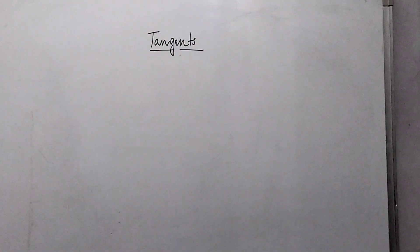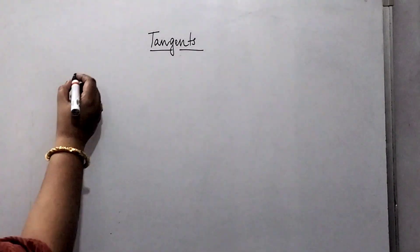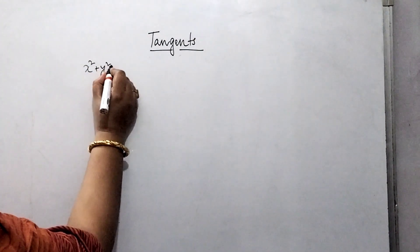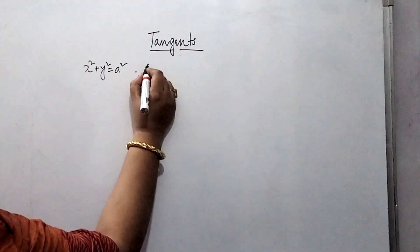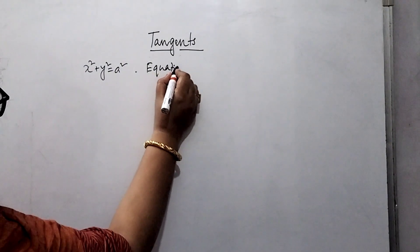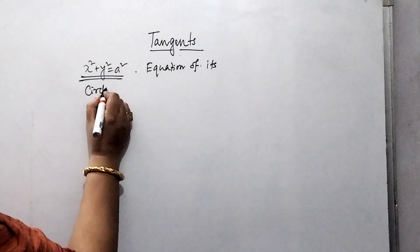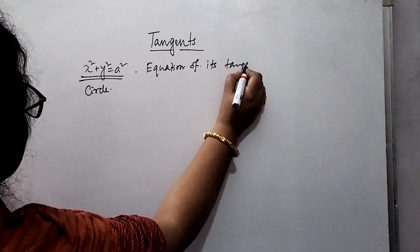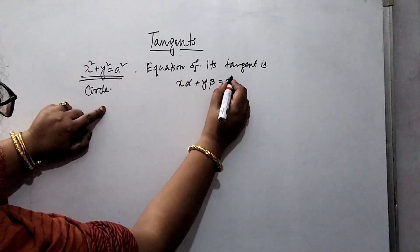Now let's discuss the equations of tangents of a few well-known conics. If we consider the equation of a circle x² + y² = a², and suppose we are taking any point (alpha, beta) on it, then the equation of its tangent is x·alpha + y·beta = a².